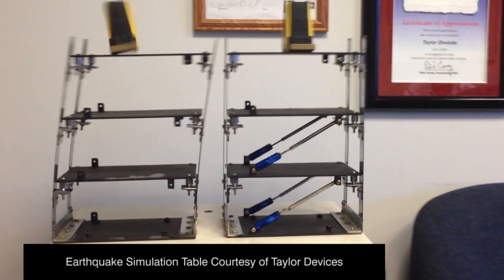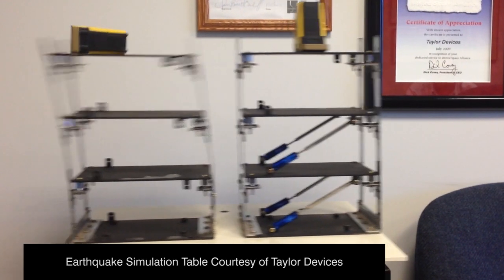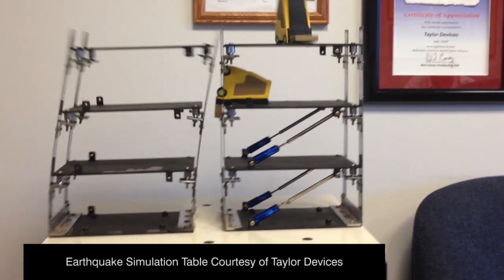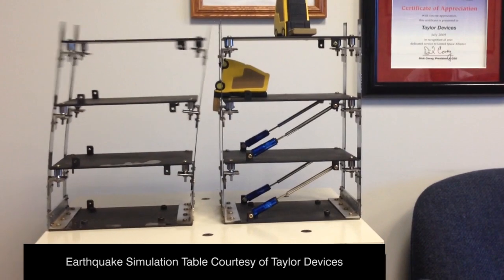The effects of an earthquake on a building with and without dampers can be very dramatic. The transference of energy through the damper fluid minimizes lateral movement and stress on the structure, which can lead to collapse.